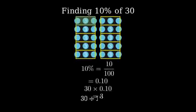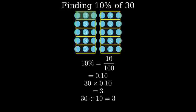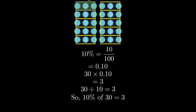Here's another way to think about it. We can first divide 30 by 10, which gives us 3, and that's the same as finding 10% of 30. Therefore, whether we divide 30 by 10 or multiply 30 by 0.10, we get the same answer. 10% of 30 is 3. We'll see you next time.